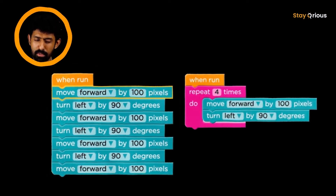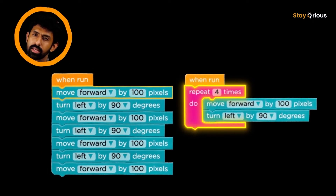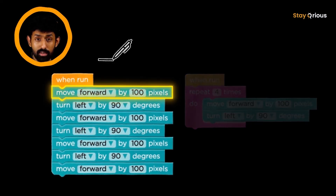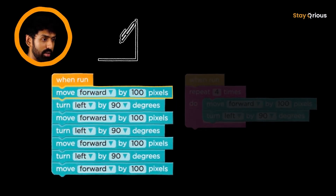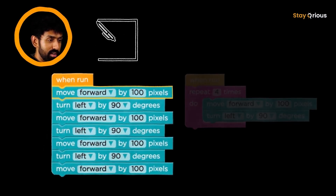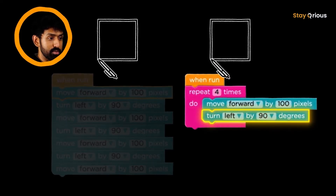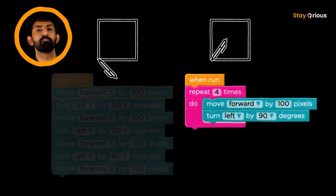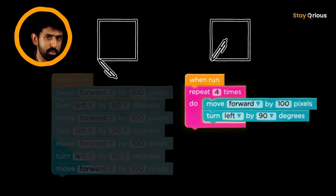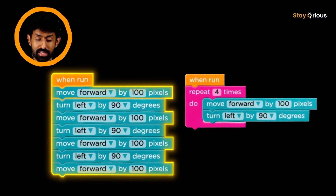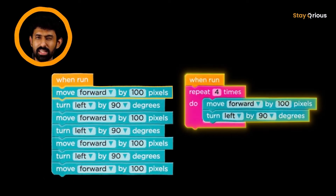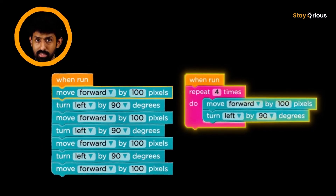How did that happen? When you use the repeat block, you actually added an extra step. You went forward, turn left, forward, turn left, forward, turn left, forward — then turn left one more time. But that last turn left isn't needed; the square was already done, you just turned again because that's how the repeat block works. So actually the longer explicit code runs faster — it has one fewer step. Very mildly, but it still matters.